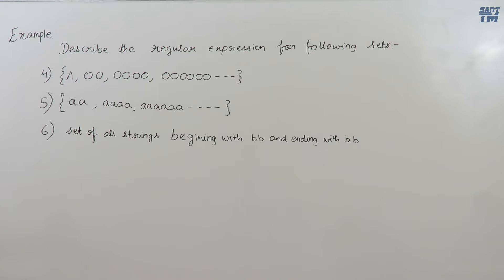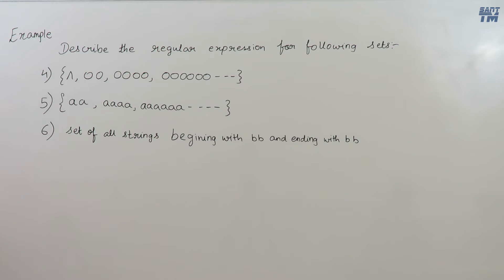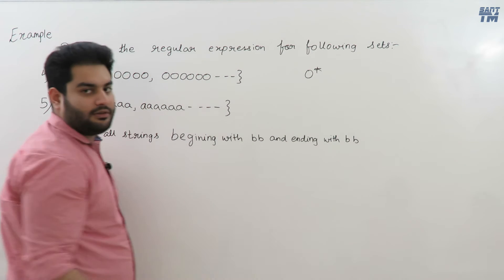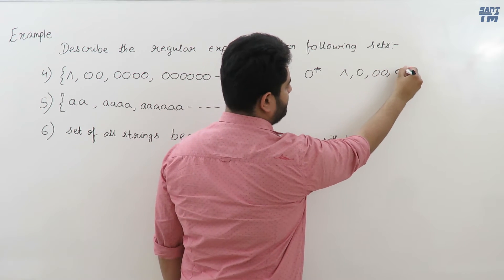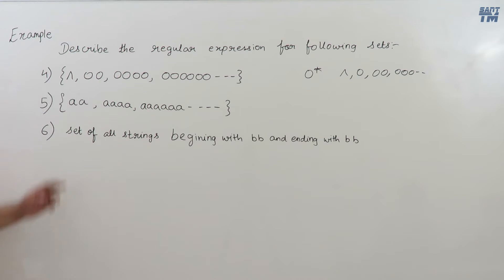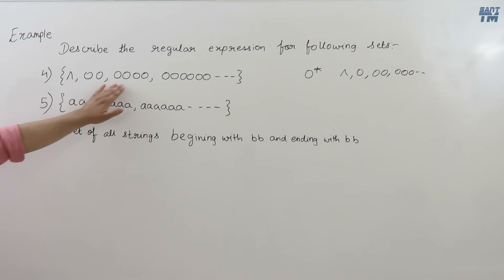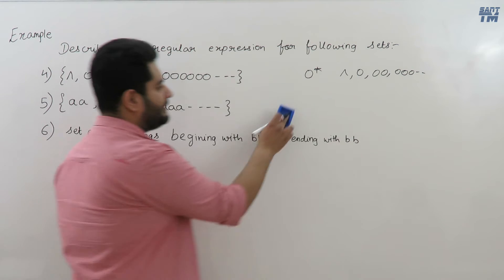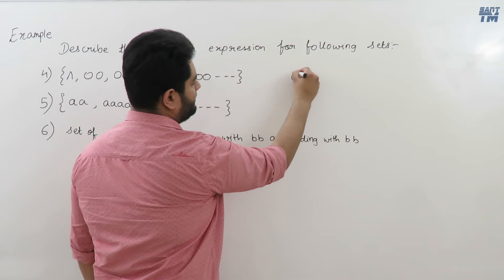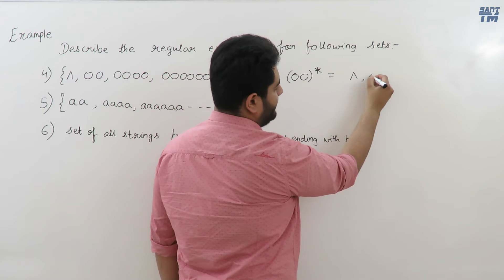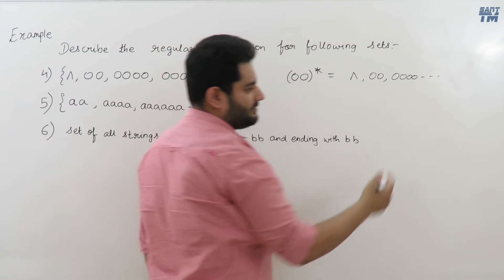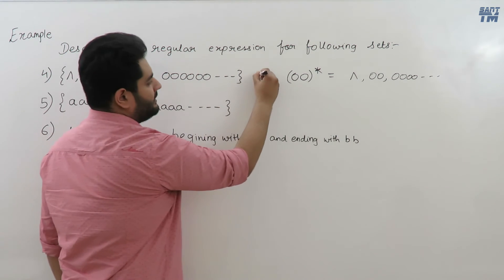Now consider the set {null, 00, 0000, 000000, ...} — strings with an even number of 0s. Do not confuse this with 0-closure, which allows any number of 0s including odd counts. Here, only even numbers of 0s are allowed. The regular expression is (00)*, because (00)* generates null, then 00, then 0000, then 000000, and so on.